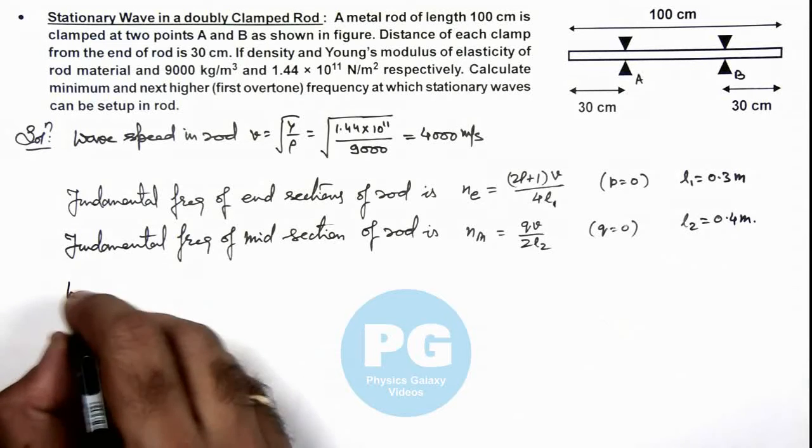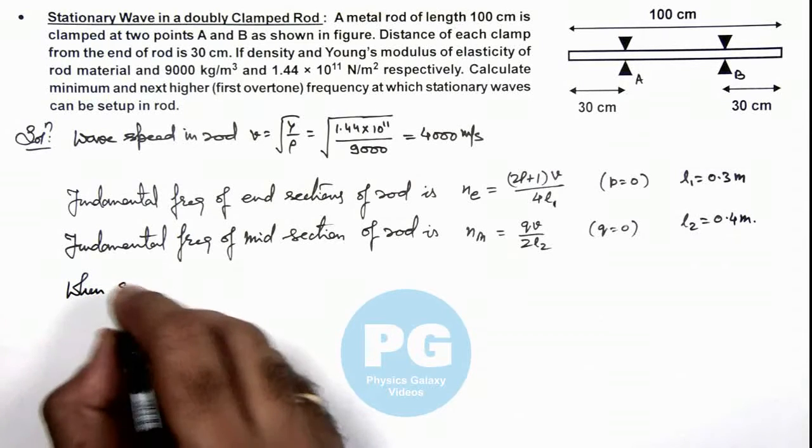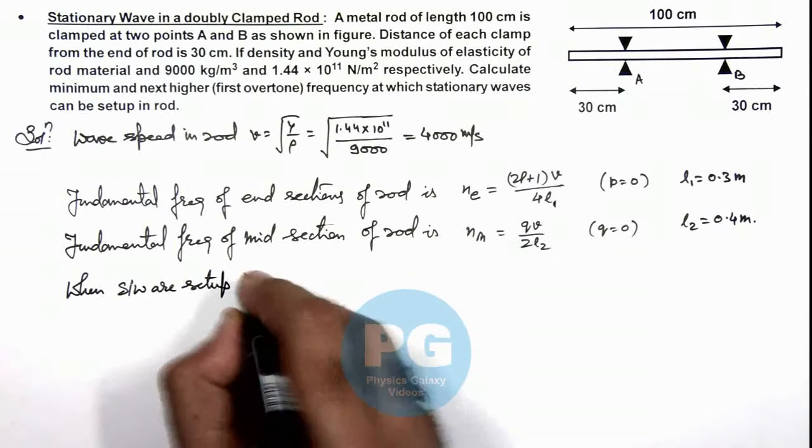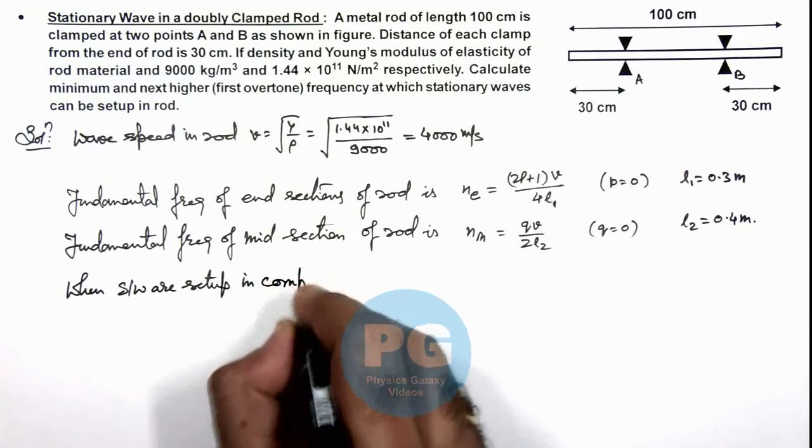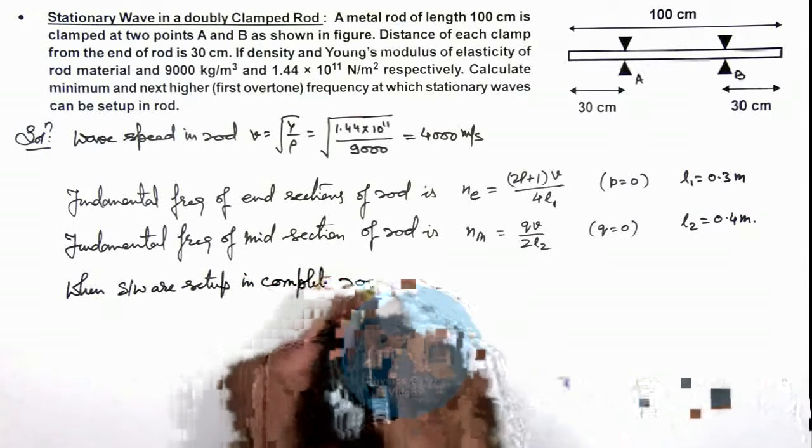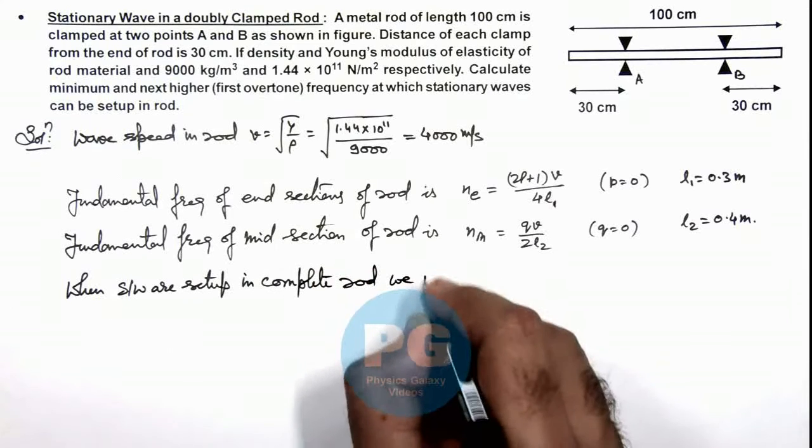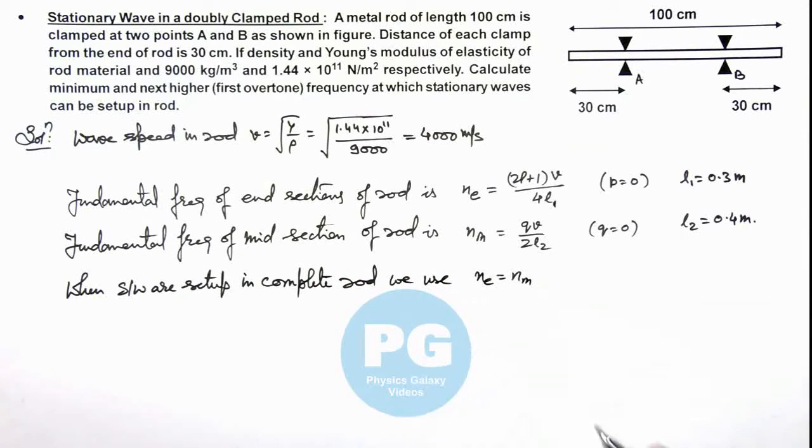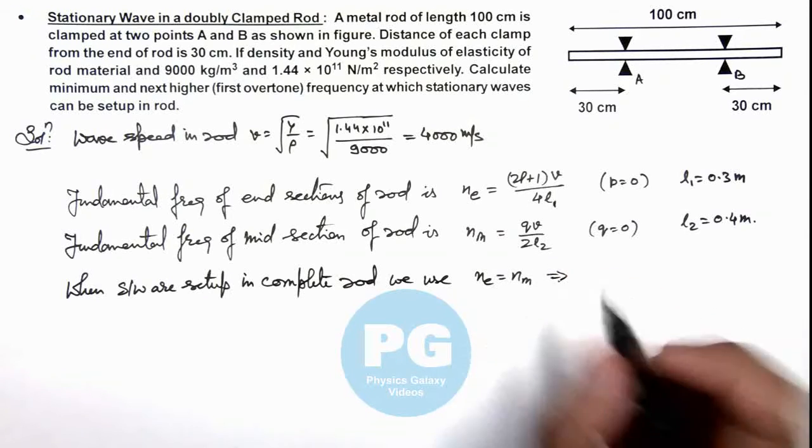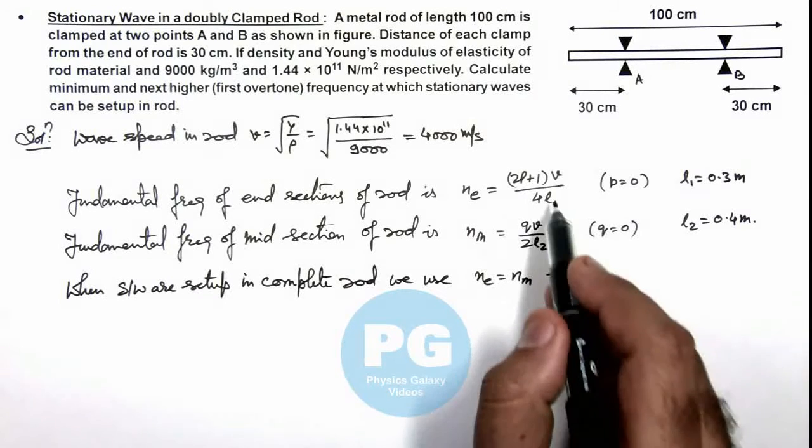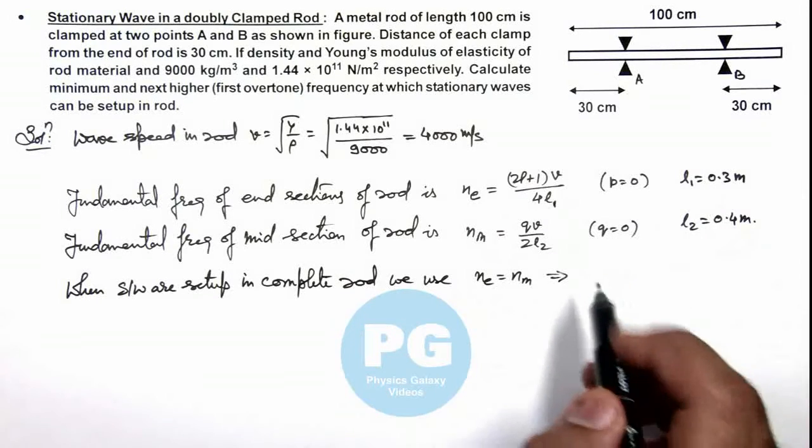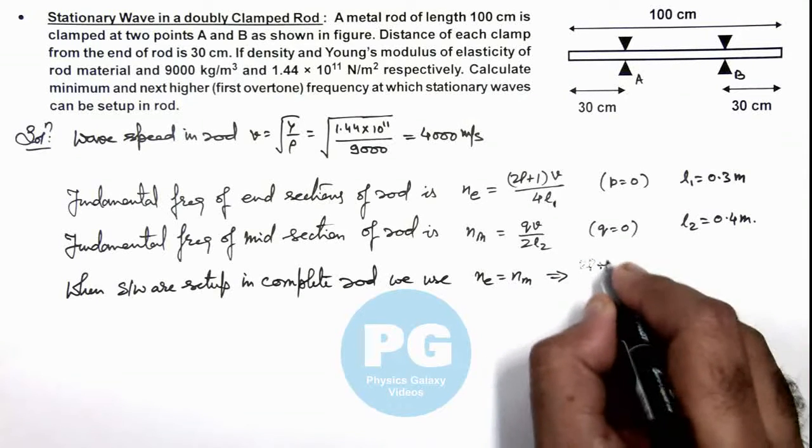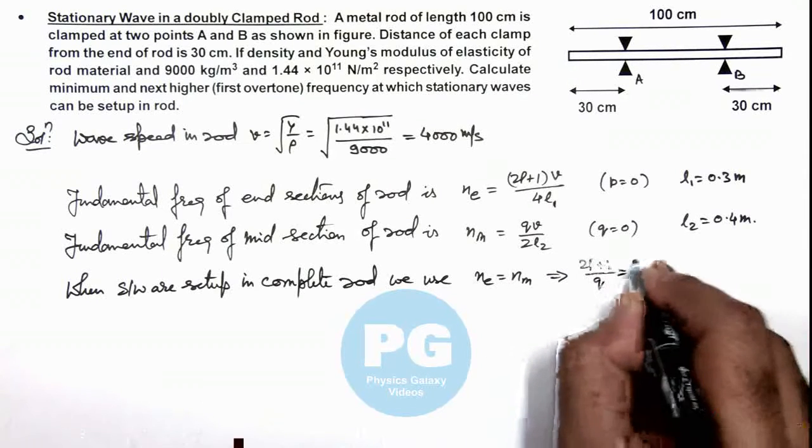We can write when stationary waves are set up in complete rod, we use n_e is equal to n_m. And if we equate the two, this will give us—here v gets cancelled out. On equating these two values, we'll get (2p + 1) / q is equal to 3/2.